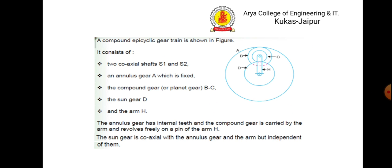The compound epicyclic gear train is shown in the figure. It consists of coaxial shafts s1 and s2. Gear a is the annular gear which has internal teeth. Gears b and c are compound gears, also known as planet gears. Gear d is the sun gear and h is the arm. The compound gear is carried by the arm and revolves freely on a pin of arm h. The sun gear is coaxial with the annular gear and the arm but independent of them.